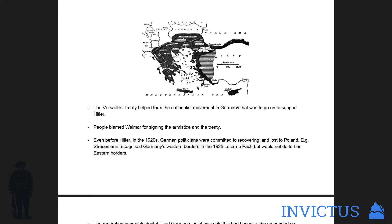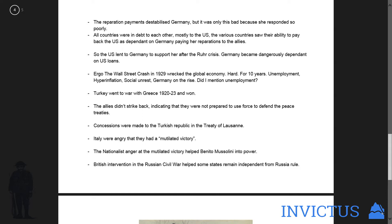Even before Hitler in the 1920s, German politicians were committed to recovering land lost to Poland. For example, Stresemann recognised Germany's western borders in the 1925 Locarno Pact but would not do the same for her eastern borders, because some of them insisted on maintaining German prestige. The reparation payments destabilised Germany, but it was only this bad because she responded so poorly — she wasn't even able to pay the reparations.